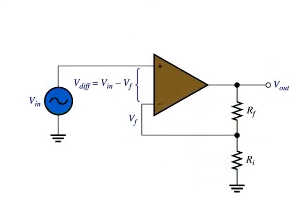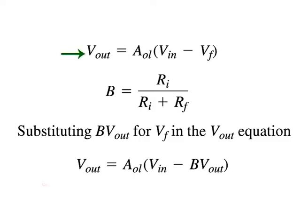The feedback voltage is expressed as Vf equals RI over RI plus RF, into Vout. As shown in this figure, the difference of the input voltage Vin and the feedback voltage Vf is the differential input to the op-amp. The differential voltage is amplified by the open-loop voltage gain AOL and produces an output voltage expressed as Vout equals AOL into Vin minus Vf. The attenuation B of the feedback circuit is equal to RI over RI plus RF.